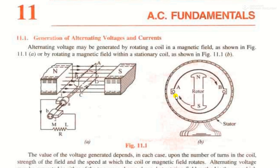The principle of the generator: the operation of all electric generators, whether DC or AC, is based upon the fact that when a conductor is moved in a magnetic field, or a magnetic field is moved with respect to the conductor, according to Faraday's laws of electromagnetic induction, an electromotive force is set up in the conductor. Thus, as long as there is relative motion between the conductor and the magnetic field, a voltage will always be generated. AC generators are commonly called alternators.